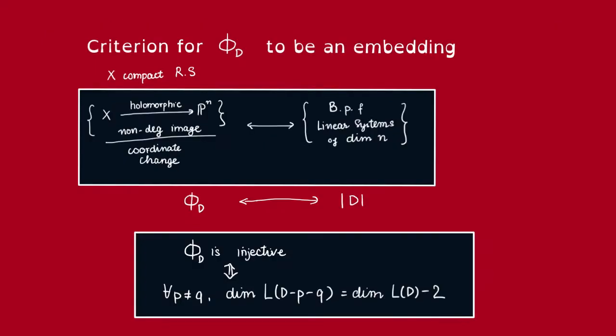So previously, given a complete linear system D on a compact Riemann surface X, we looked at the holomorphic map corresponding to that φ_D, and we asked what is the criterion for φ_D to be an embedding. In the previous video, we have given a criterion for φ_D to be injective in terms of the Riemann-Roch spaces.